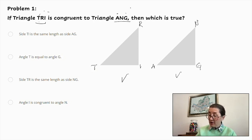We'll start at the bottom. Angle I is congruent to angle N. So this is I, and this is N, and we can see they are not congruent. So we can cross that off. Side TR is the same length as side NG. So we've got side TR here and side NG here, and they are not the same. So we can eliminate that answer as well.